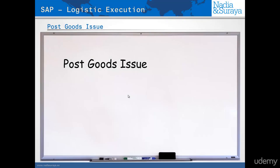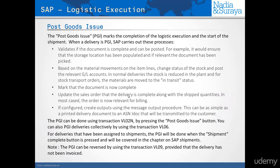Now finally let's have a look at the post goods issue. The post goods issue marks the completion of logistics execution and the start of the shipment. This means that the goods have now left the plant and are en route to the customer.